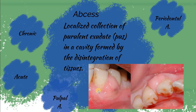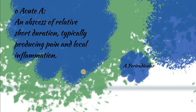We have abscesses. The definition of an abscess is a localized collection of pus in a cavity formed by disintegration of the tissues. We have many types of abscesses. Acute abscesses are those of short duration, typically producing pain and local inflammation.